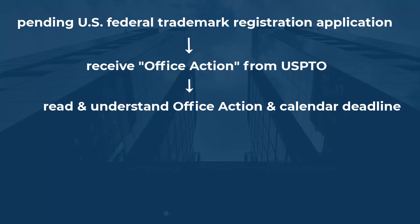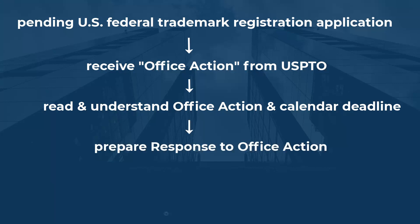Once you've received and understood the office action, and assuming there is a response pathway to move forward, the trademark attorney will prepare the response. Once prepared, you have to get it filed with the USPTO in that particular pending trademark application. At that point, you need to log into your My USPTO account at the USPTO.gov website — creating one first if you don't already have one. Then you select the proper USPTO online web response form and start answering the questions pertaining to responding to that office action.